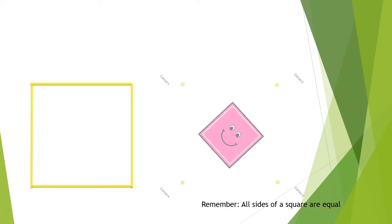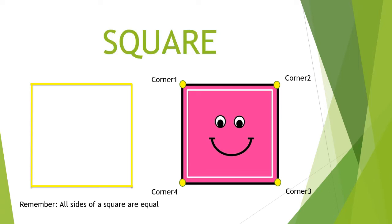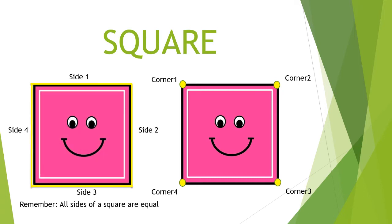Children, today we will discuss four different plane shapes or two-dimensional shapes. The first shape is a square. Do you know how a square looks like? I will show you — this is a square.